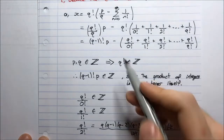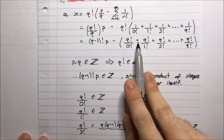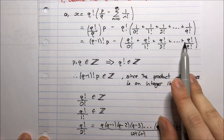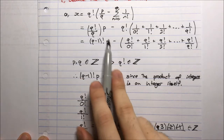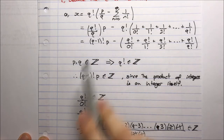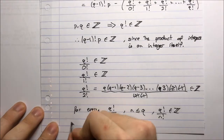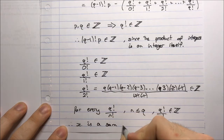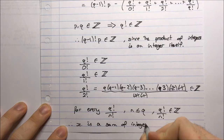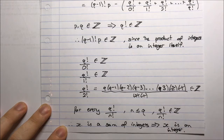So this entire summation term is an integer, because we're adding integers each time. And the first term, q minus 1 factorial times p, is also an integer. Therefore, x is a sum of integers, which means that x is an integer. That's Part A.